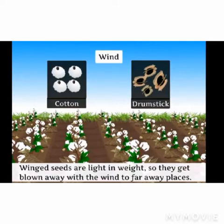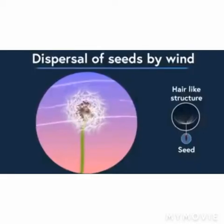The first one is dispersal of seeds by wind. Seeds of cotton, drumstick and dandelion are dispersed by wind because they have wings — that is a fur or hair-like structure — and they are light in weight, so they get blown away with the wind to far away places.